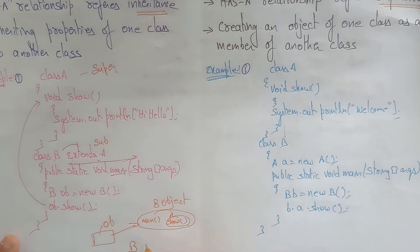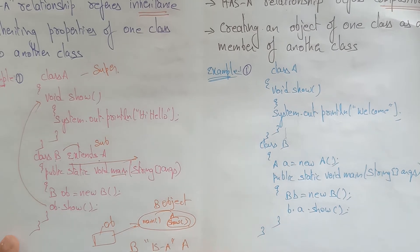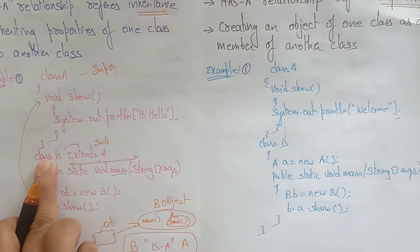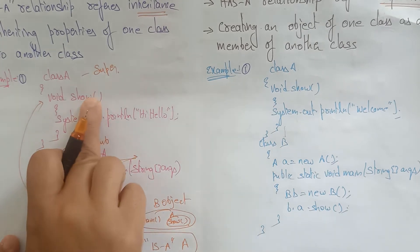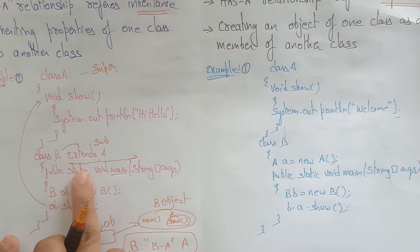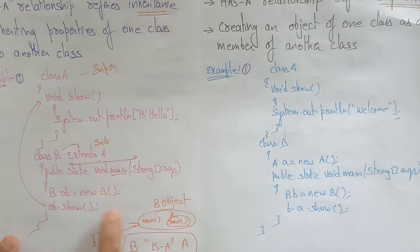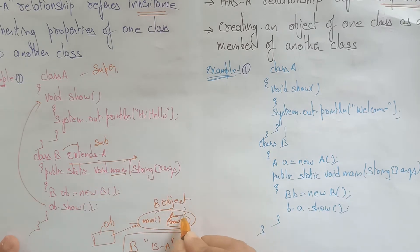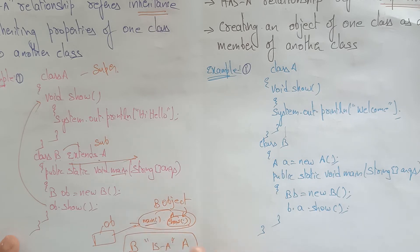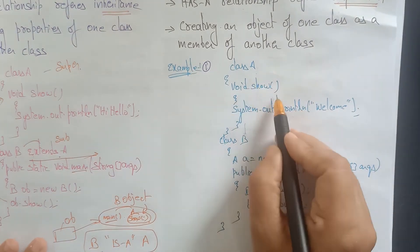So class B is having an 'is-a' relationship with A. We are inheriting the properties of one class into another class — that is the 'is-a' relationship. Class A has a show method printing 'welcome'.